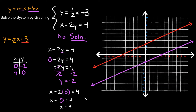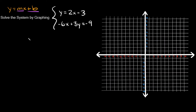Let's do one last example. Solve the system by graphing. The equations are y equals 2x minus 3, and negative 6x plus 3y equals negative 9. Again, we'll use slope-intercept form.